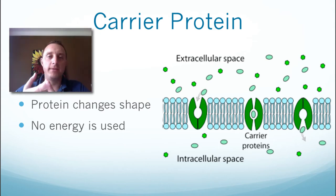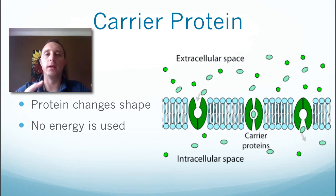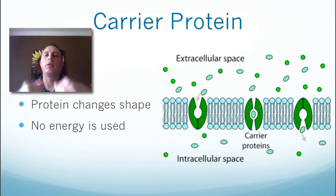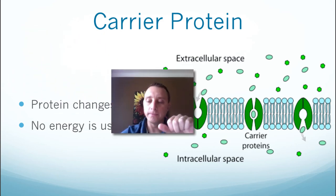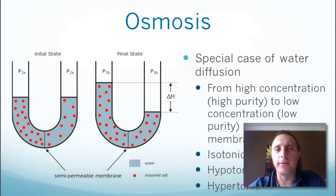To summarize passive transport: simple diffusion allows very small, uncharged, lipid-soluble molecules to move right in between the phospholipid molecules of the membrane. Facilitated diffusion uses transport proteins — either channel or carrier proteins — to help water-soluble or larger molecules get through the membrane. There is also one other specialized form of passive transport that tends to confuse students, and that is osmosis.